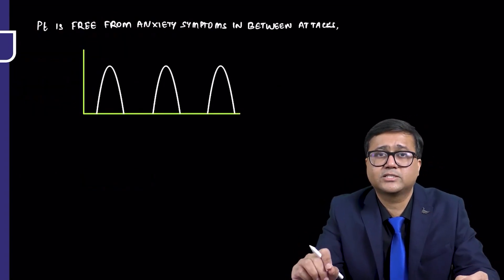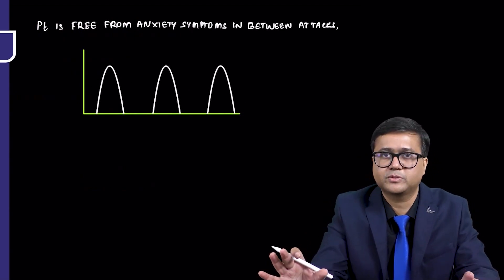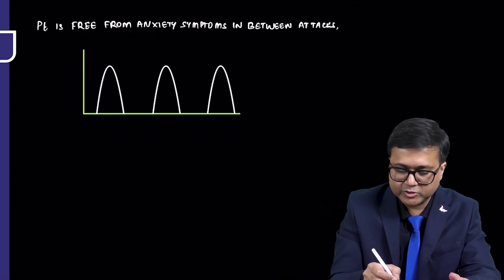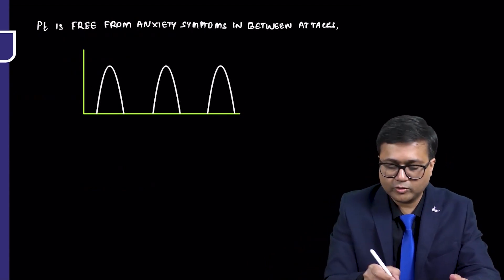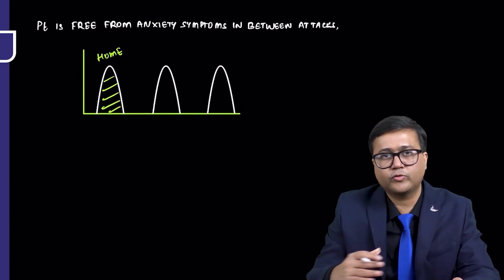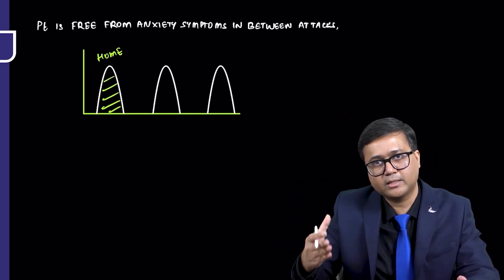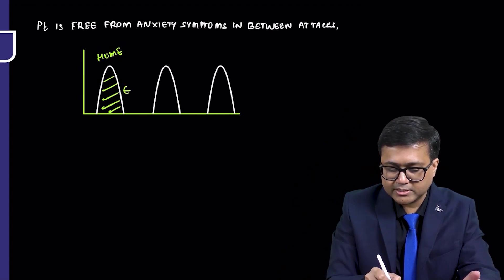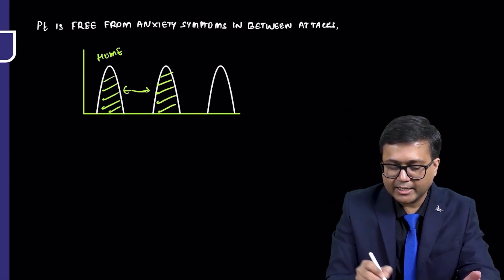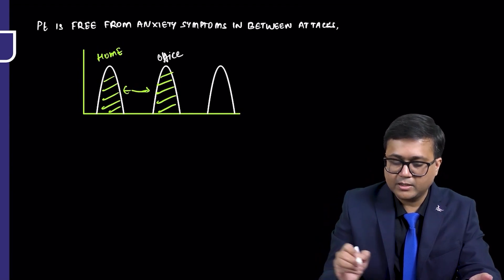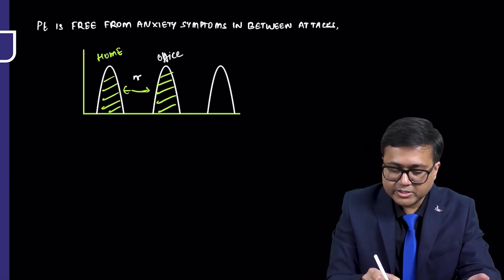And in between these attacks, the patient is free from anxiety symptoms. For example, if you look at this diagram, so a patient had an episode of sudden onset of anxiety when he was at his home. It was sudden onset of anxiety, lasted for few minutes, and the person became alright.